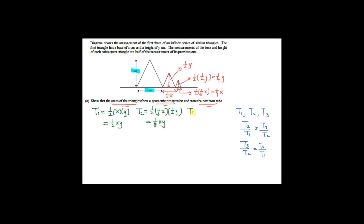The third term is also half times base times height. For the third triangle the base is X/4 and the height is Y/4, so T3 equals (1/32)XY. Now for the second step: find T2 divided by T1. That is (1/8)XY divided by (1/2)XY. Cancel the XY and you get a ratio of 1/4.